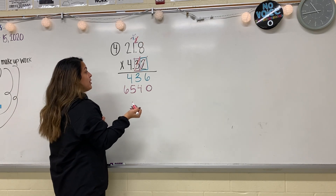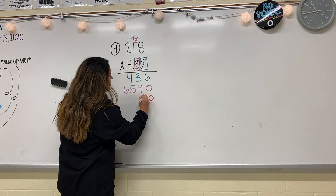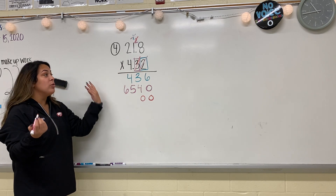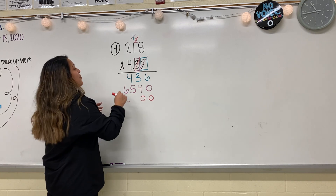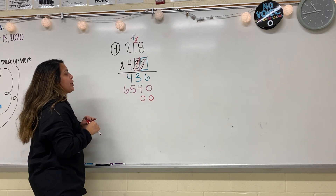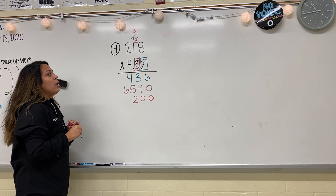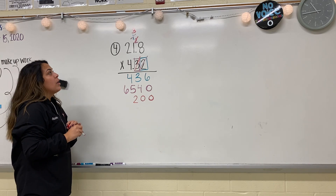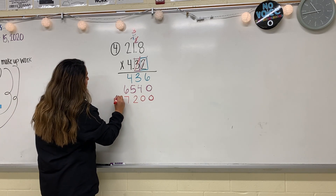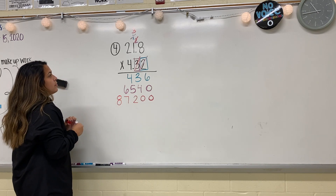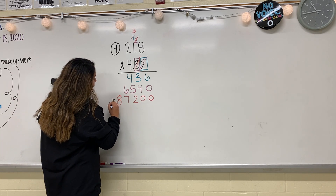Remember, since I'm moving over to the third number, I need to add two place value holders to show that I've already multiplied by the hundredths place and the tenths place. So now I'm going to multiply. Four times eight is 32 — put my two, carry my three. One times four is four; four plus three is seven. And then two times four is eight. I have nothing else that needs to be multiplied, so I'm going to add our products together.